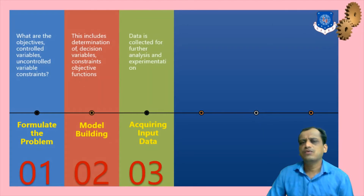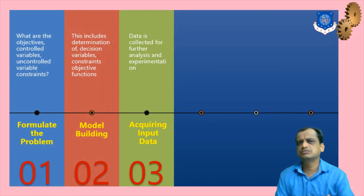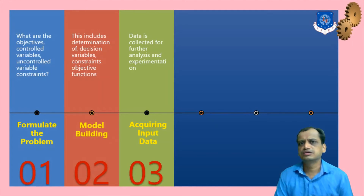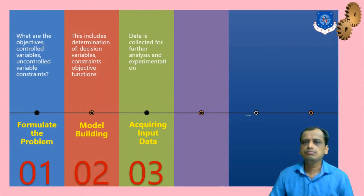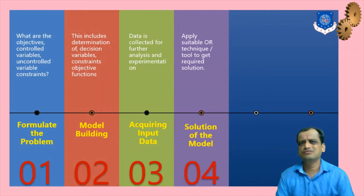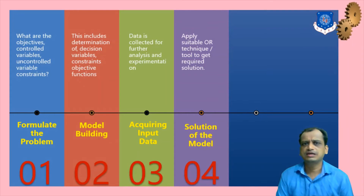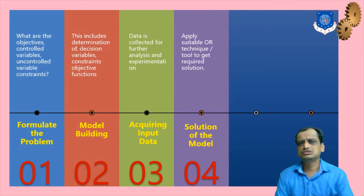The third phase is acquiring data. You collect data from the problem environment — as much data as possible for model calculations. Whatever model you have built, you collect data around it, and then you solve the problem with the help of computers, which are used extensively today. The fourth phase is the solution of the model. There are hundreds of tools and techniques under the umbrella of operations research. You find a suitable OR technique and apply it to the model to find solutions. It does not guarantee optimum solutions always, but better solutions are definitely the goal.